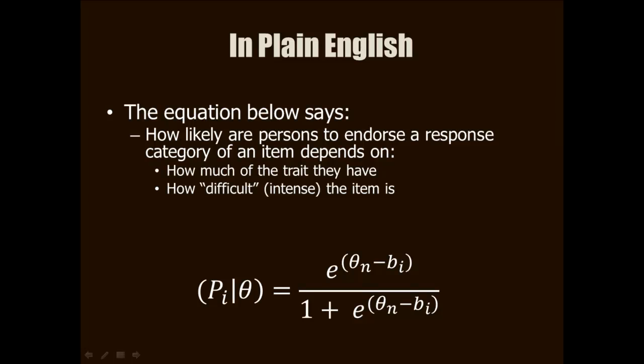Now that you know what all the letters stand for, you can read this equation in plain English. The equation says how likely a person is to pick a particular item response depends on how much of the trait they have and how difficult the item is. I hope this sounds familiar to you.